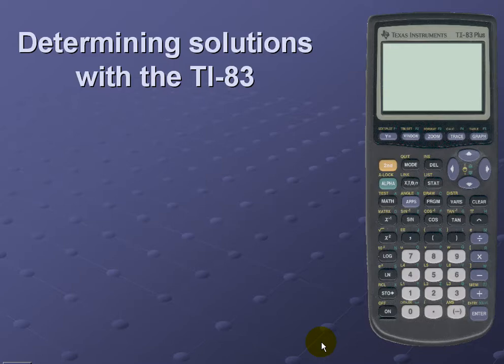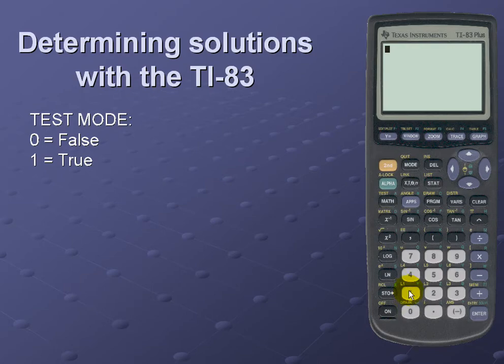Here we'll take a look at the calculator solution. So we must first talk about the test mode. While we're in test mode, we must keep in mind that if a 0 is returned that equals false; if a 1 is returned that equals true. For our example, we'll use 3.